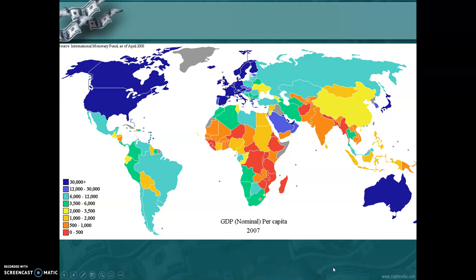Looking at this image — this is back in 2007, so China has changed a bit — at the time it was about $3,500 per person, while the U.S. was somewhere around $60,000. Huge difference.